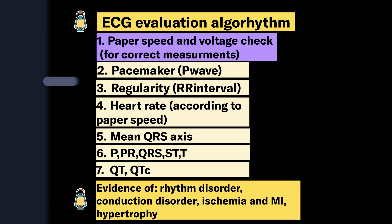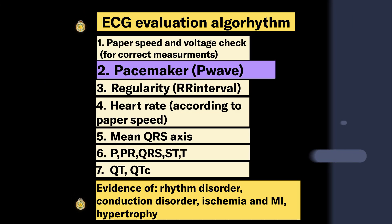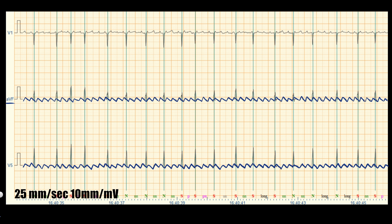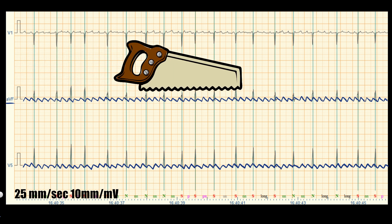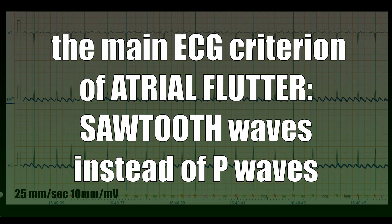The next step is a pacemaker check or examination of the P wave. In our ECG there are no P waves, which means this is not sinus rhythm. But instead of P waves we see sawtooth waves in AVF and V5. The presence of sawtooth waves is a crucial ECG criterion of atrial flutter.